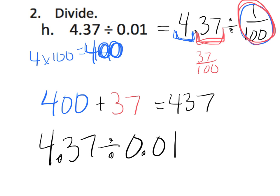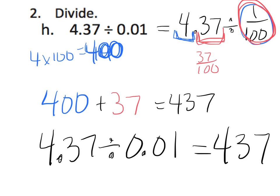So 4.37 divided by one-hundredth equals four hundred thirty-seven. Parents and teachers, remember this is totally not the standard algorithm. This is not the ultimate goal — it's merely a stepping stone towards the standard algorithm. If you don't like this method, that's okay. Grin and bear it, and try to develop that number sense in students on their way towards the standard algorithm.